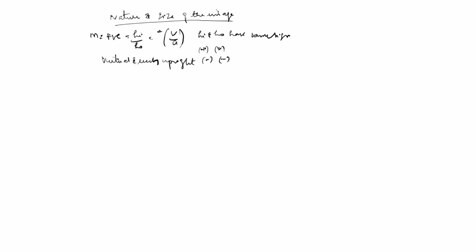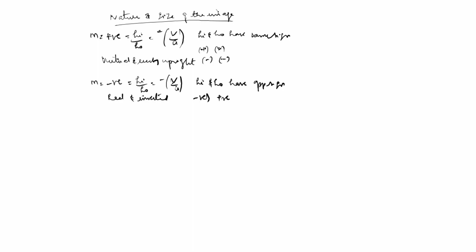If m is equal to negative, that means the image is real and inverted. This equals hi by ho equals minus v by u, and in this case hi and ho have opposite signs. Since ho comes only positive, hi must come negative. So hi is negative and ho is positive — negative divided by positive gives negative. That is why m is negative in this case.